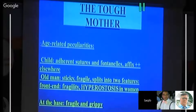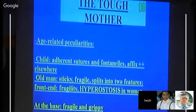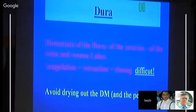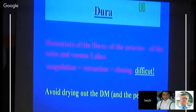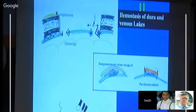Dura has age-related differences: in children it is adherent, especially at the fontanelles; in older people it is more sticky and fragile and may split into two layers anteriorly. In females, hyperostosis may be found. At the skull base, the dura is very thin, making hemostasis of dural arteries and veins difficult. Avoid coagulating the dura as it causes retraction and worsens hemostasis. Avoid drying the dura and pericranium as they shrink, making closure difficult. When placing tacking sutures, tag to pericranium or bone rather than skin. Don't burn the dura; if sinus damage occurs, use tamponade with cottonoid or surgicel, or a muscle patch.